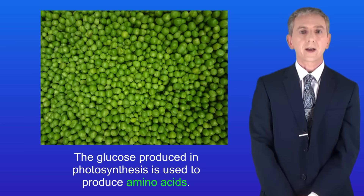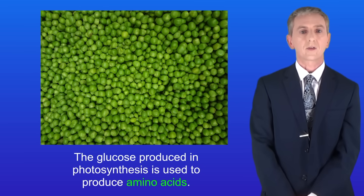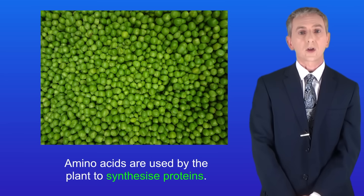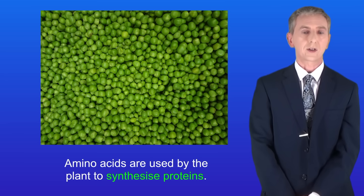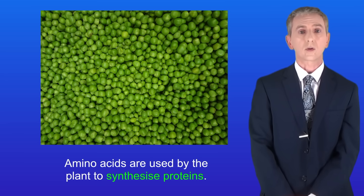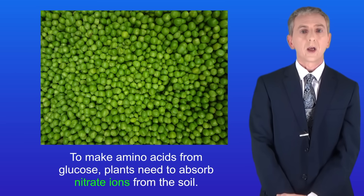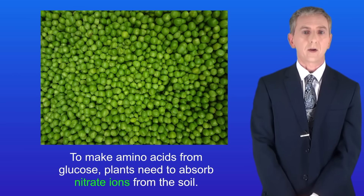There's one final use for the glucose produced in photosynthesis, and that's to produce amino acids. Amino acids are used by the plant to synthesize proteins, and foods such as peas are good protein sources. To make amino acids from glucose, plants need to absorb nitrate ions from the soil.